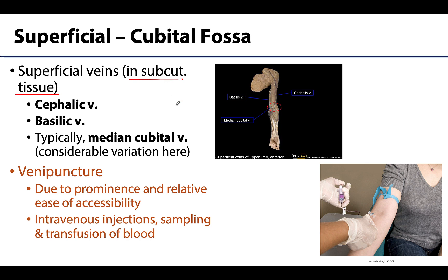The basilic vein is more medially placed, whereas the cephalic vein is more laterally placed, and both run through the cubital fossa region in this middle portion around this dashed line.